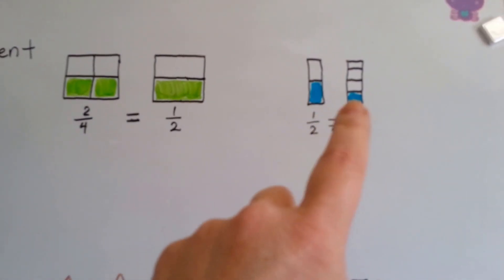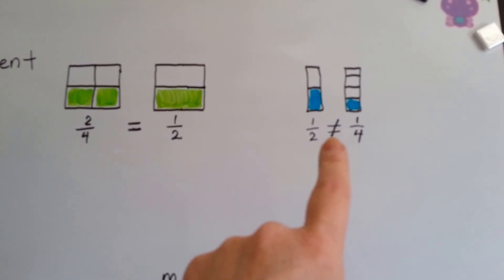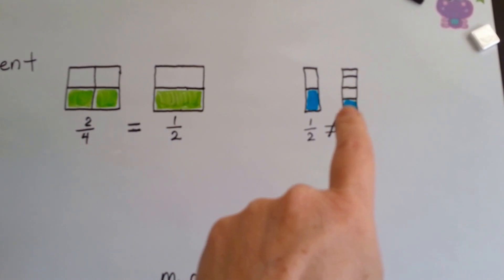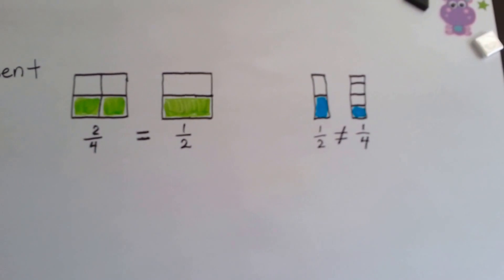But one half is not the same as one fourth. They are not equal. See, that's the not equal sign. They are not equivalent.